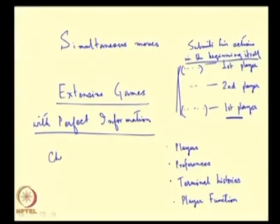A simple example of an extensive game with perfect information is the game of chess. The moves are made not simultaneously but sequentially, and each player is aware of the moves made by the other player before taking any action. So it is not only an extensive game but a game with perfect information.